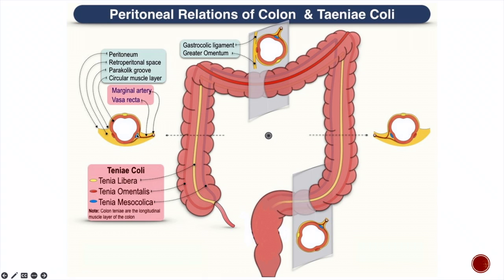Towards the mesentery it's Mesocolica. Towards the omental side — the side opposite to the attachment of the mesentery — that is Tinea Omentalis. And on the free surface of the ascending and descending colon, anteriorly, it's Tinea Libera. Libera means free, so this is the free border. These two others are the fixed borders, but this is the free border.